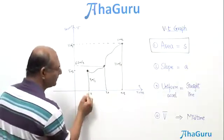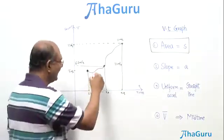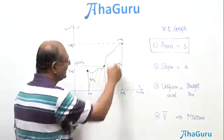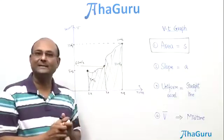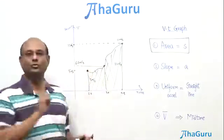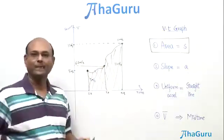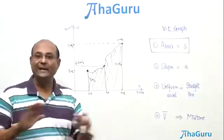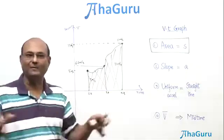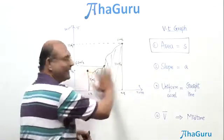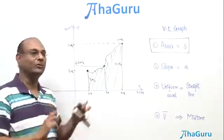The first key point is that the area under the velocity-time graph represents the displacement. If you were traveling for two seconds, this whole area of the graph represents the displacement during those two seconds. This is true in general — not just for uniform acceleration, but always. The area under the graph represents the displacement traveled during that time interval.